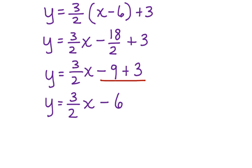Notice that this equation is now written in slope-intercept form. You could leave it like this, or take it one step further and write it in function notation. f(x) equals 3/2x minus 6. This is our final answer.